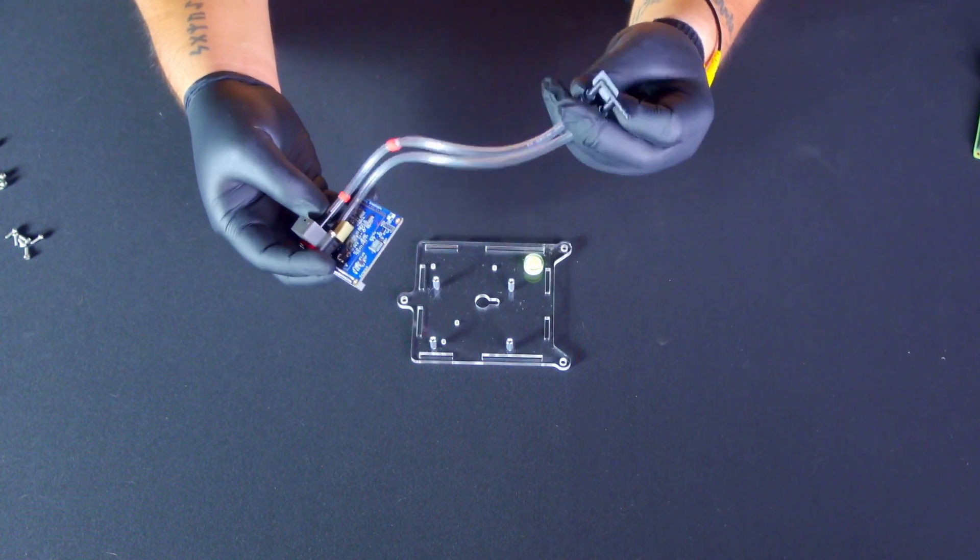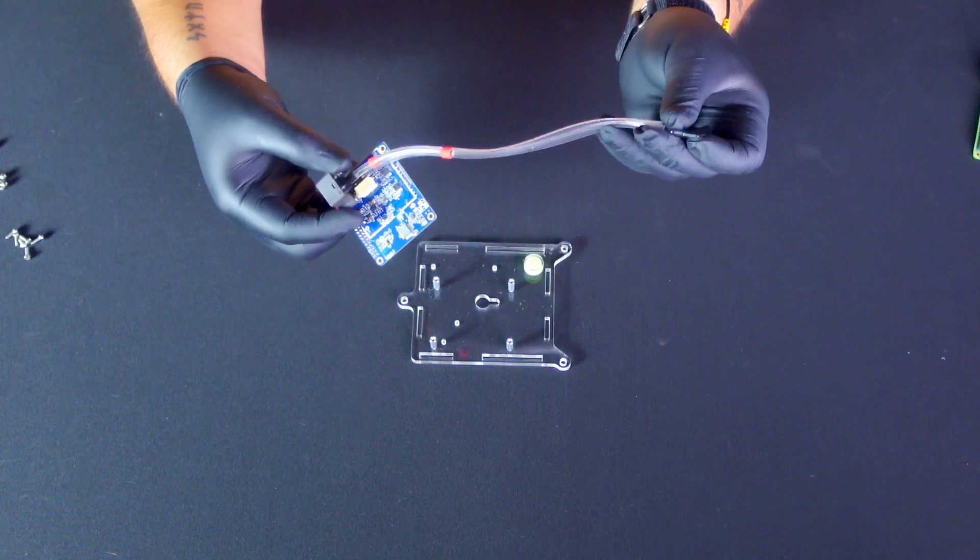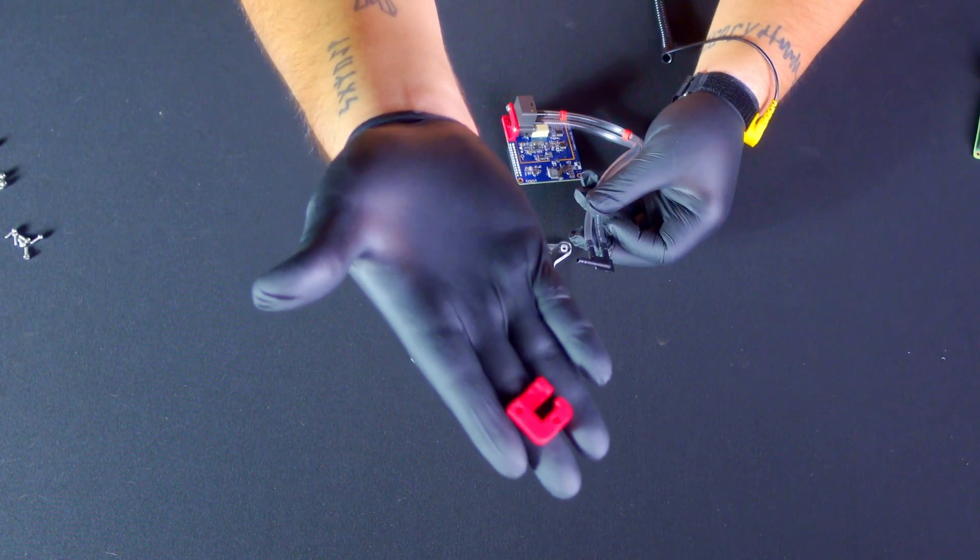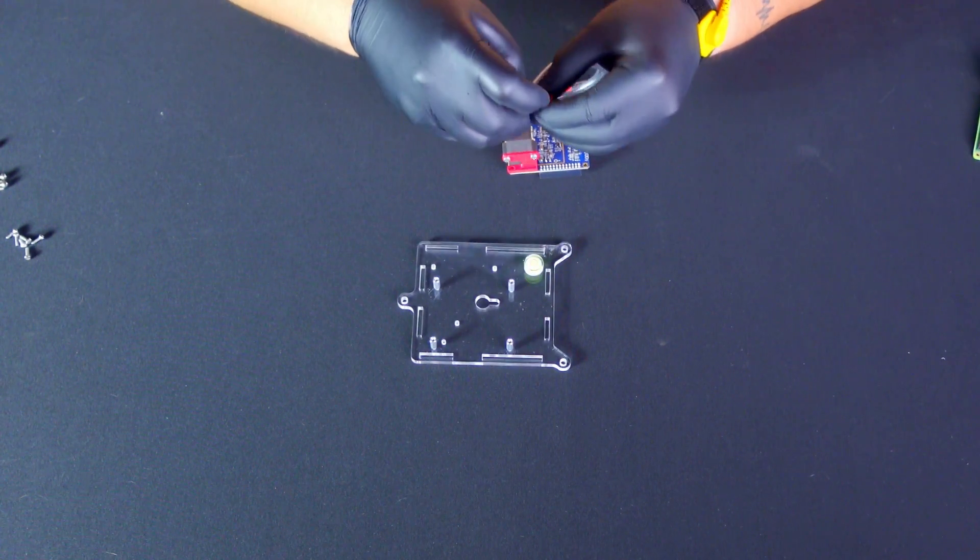Next, let's install the air inlet F connector to the acrylic base. It is through here that air enters the infrasound sensor, detecting differences in air pressure.